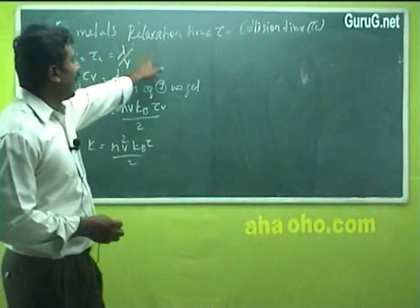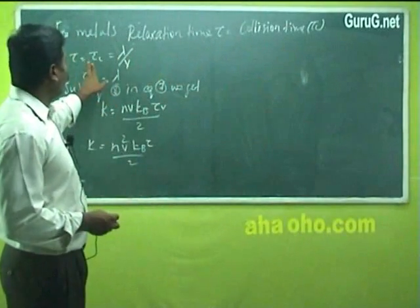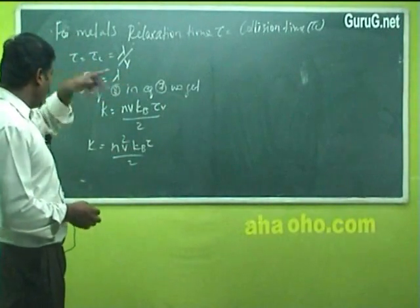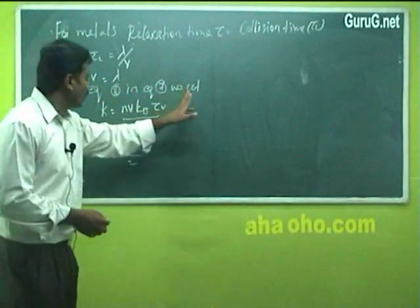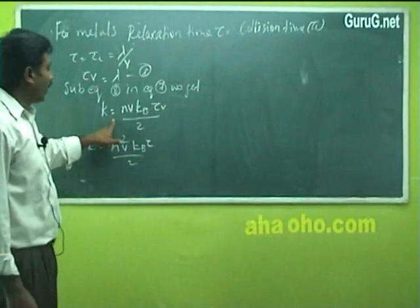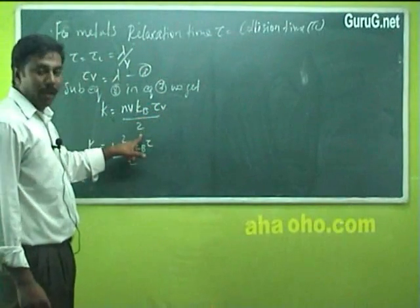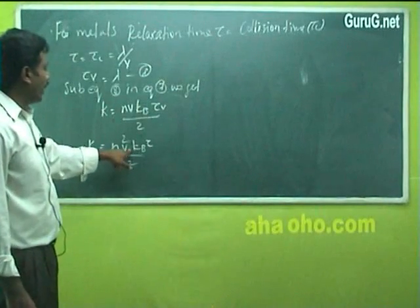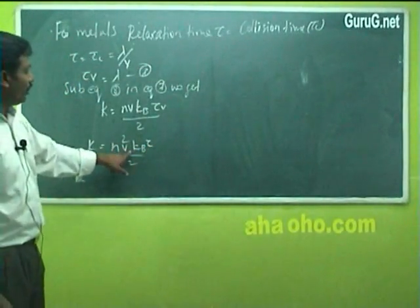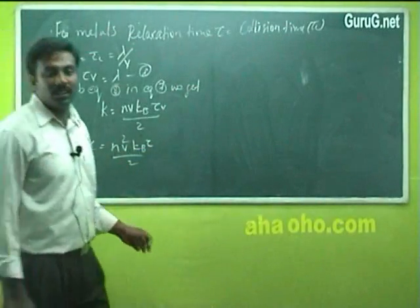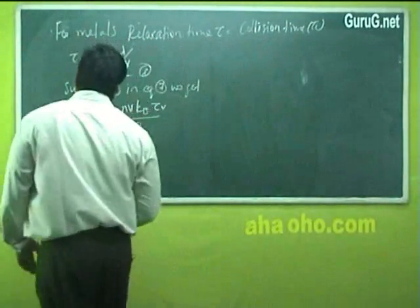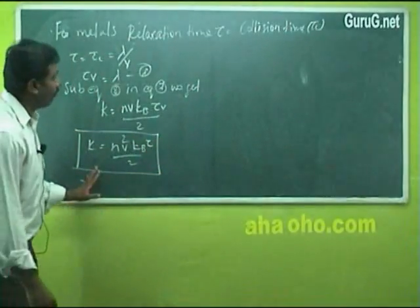For metals, relaxation time τ equals collision time τC. So τ = τC = λ/V, or τV = λ. Substituting equation 8 in equation 7, K = NV·KB·T·τV divided by 2, which gives the thermal conductivity K = NV²·KB·τ / 2. This is the classical expression for thermal conductivity of metals.